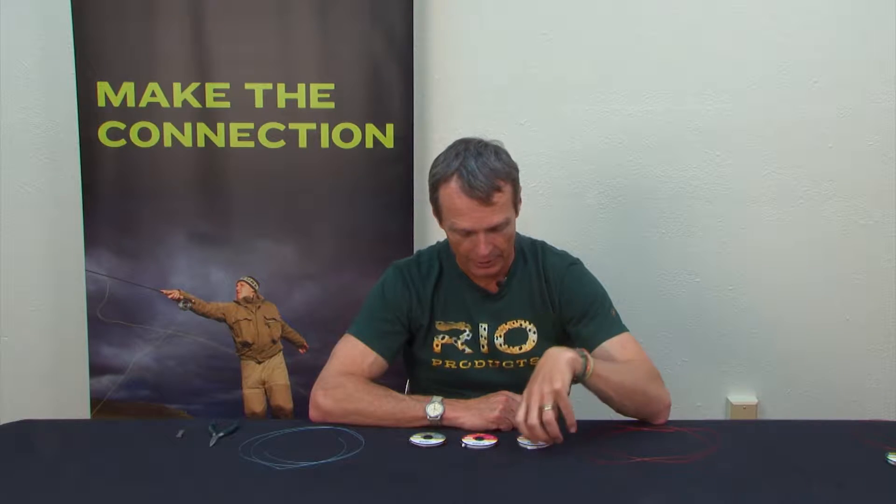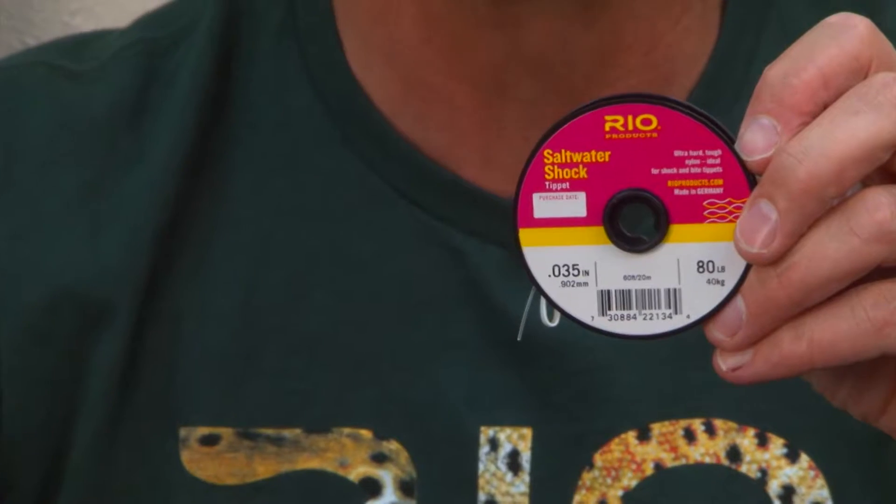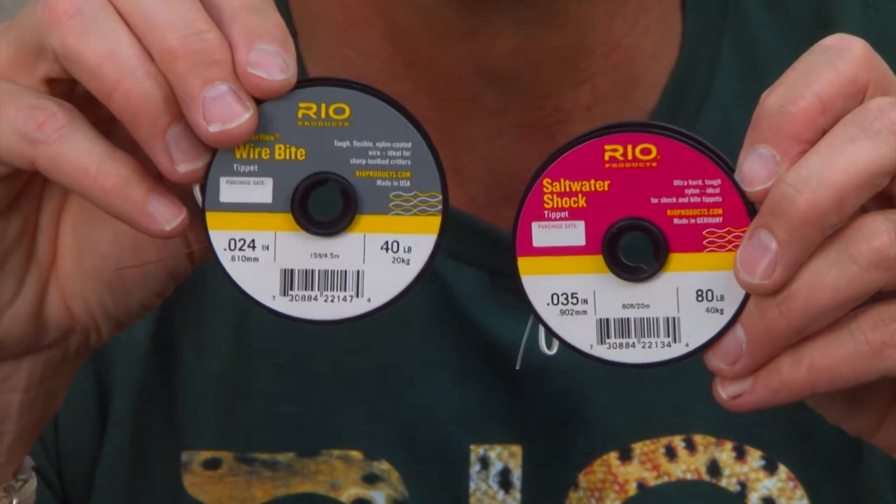Today we're going to look at the Slim Beauty. Slim Beauty is a very neat, very strong joining knot for different diameter materials. You can use it for joining hard shock tippets or wire-bite type tippets, and you use that to join to your regular,